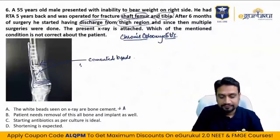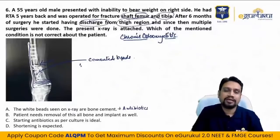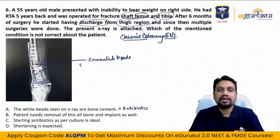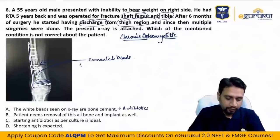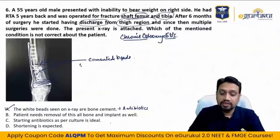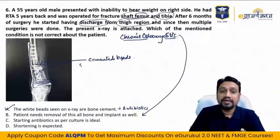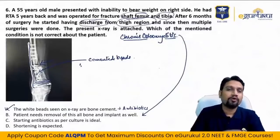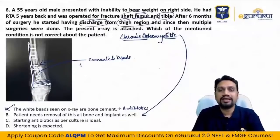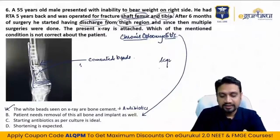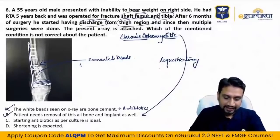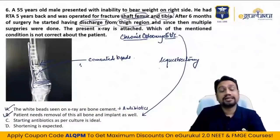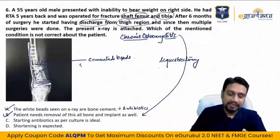Bone cement alone without antibiotic will not help — it is bone cement plus antibiotics. Bone cement can also fill large voids after curettage, vertebroplasty, tumor removal. For chronic osteomyelitis, we remove the implant, all bone cement/beads, clean thoroughly, and perform sequestrectomy — removing all dead bone. Starting antibiotics as per culture is ideal, with empirical therapy for three to four days initially. Shortening is expected in this case.